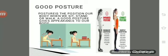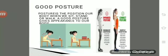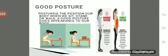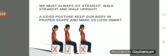Good posture is the position of our body when we sit, stand, or walk. As you can see in the picture, one girl is sitting in a bad posture while the other is sitting straight. We must always sit straight and walk upright. A good posture keeps our body in proper shape and makes us look smart.